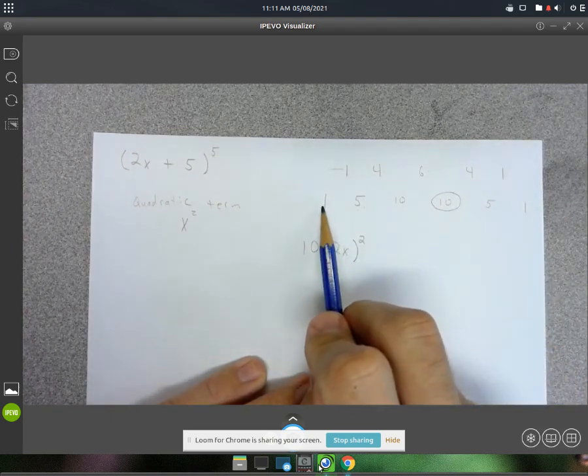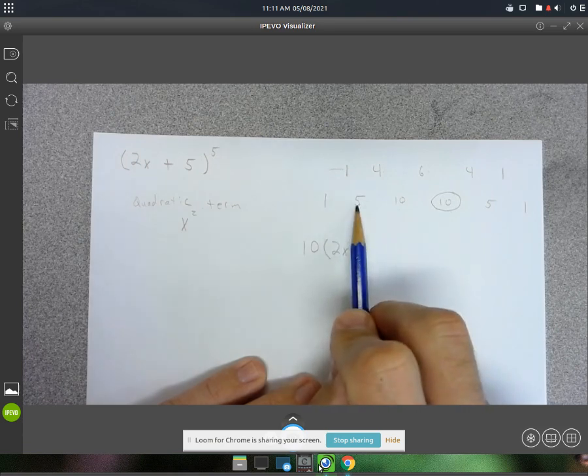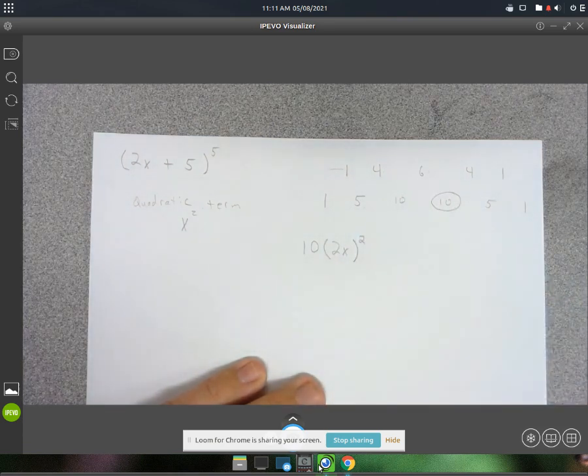So it starts off with this is 2x to the 5th, 2x to the 4th, 2x to the 3rd, this will be 2x to the 2nd power.